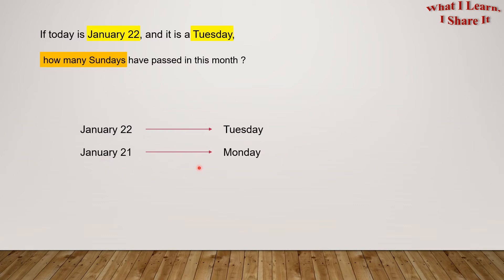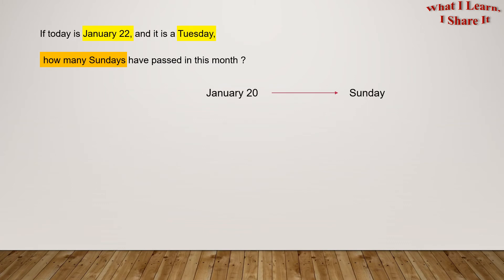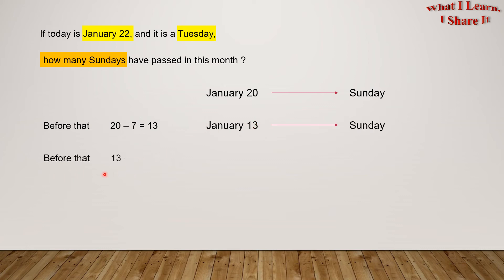So January 21st will be a Monday and of course January 20th will be a Sunday. So let's work backwards from here. The Sunday before January 20th will be 20 minus 7 equals 13. So January 13th was the last Sunday. Before that, it would be 13 minus 7 equals 6, so January 6th would be the Sunday before January 13th.